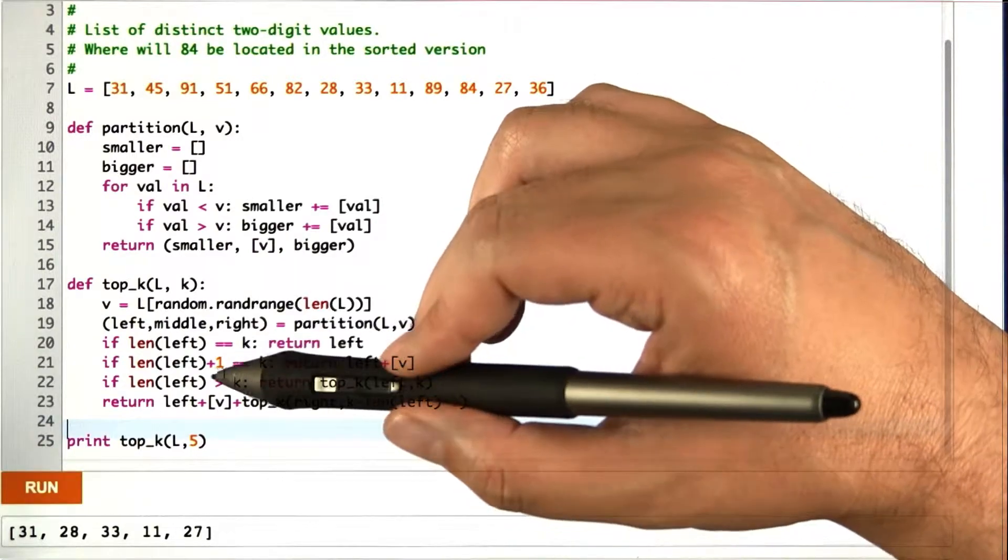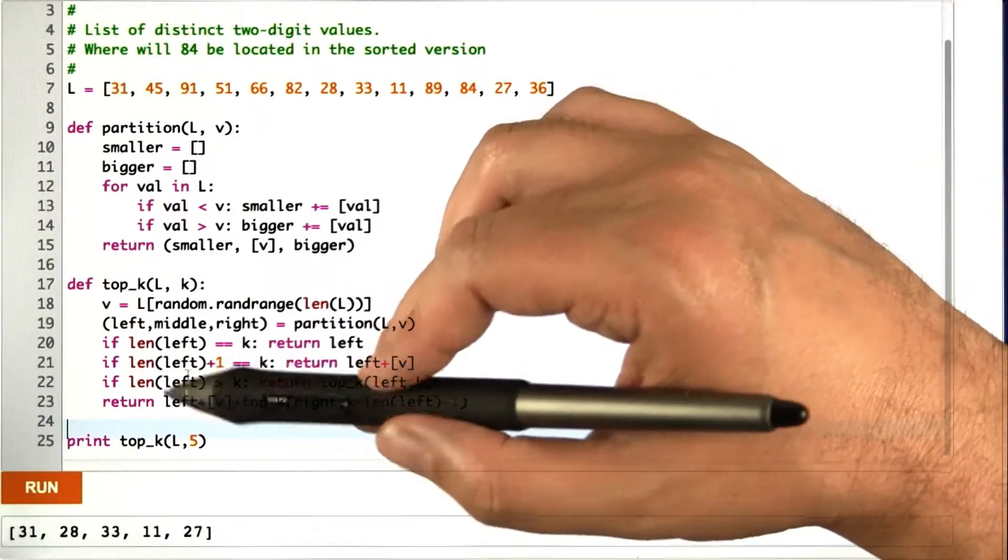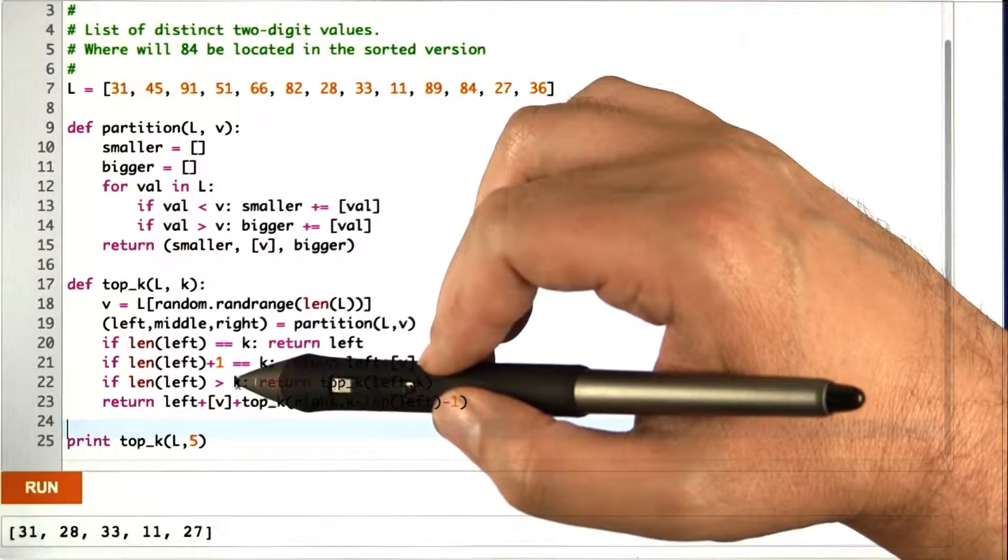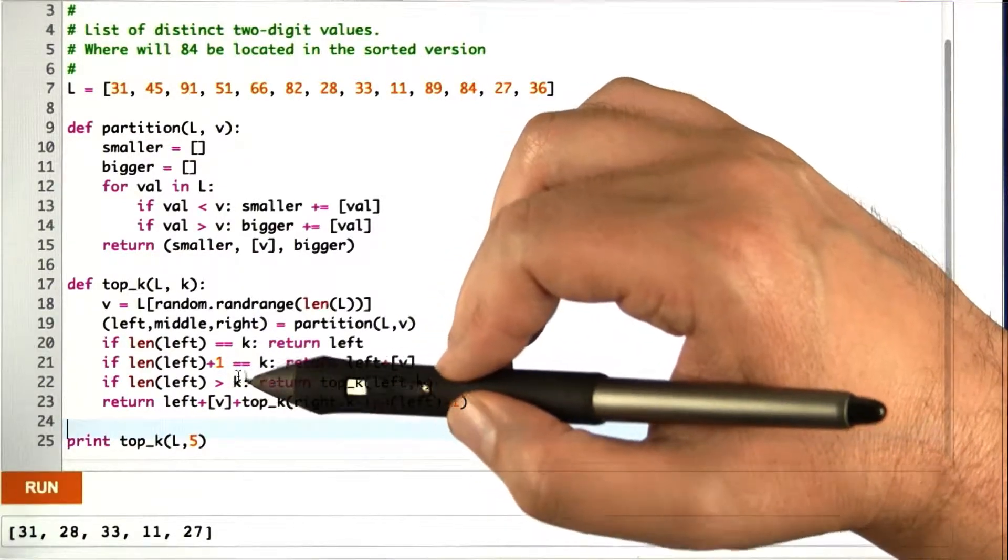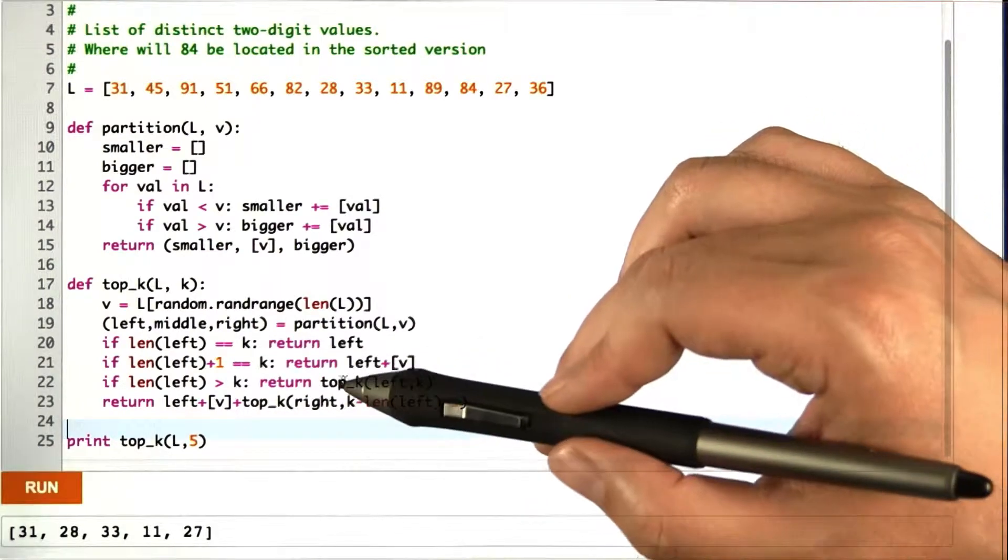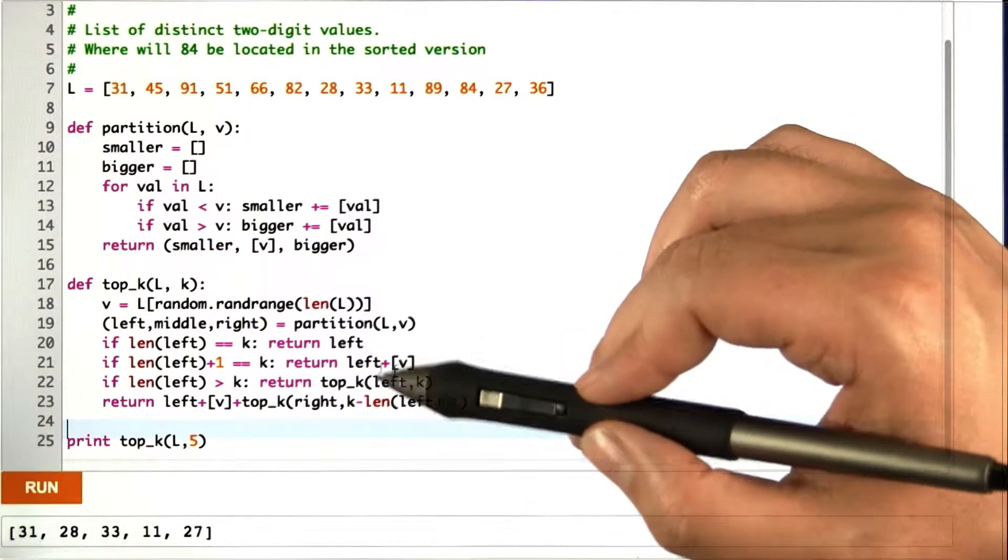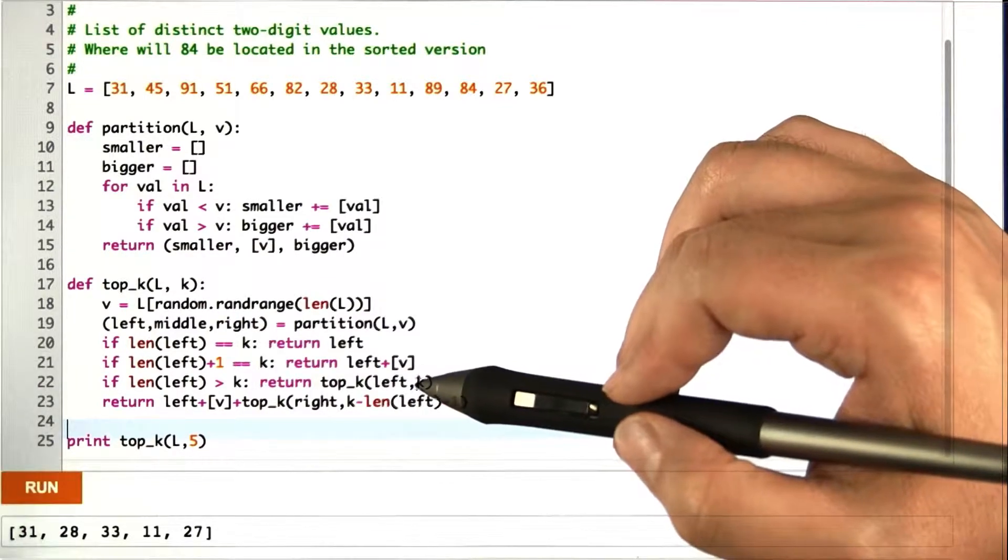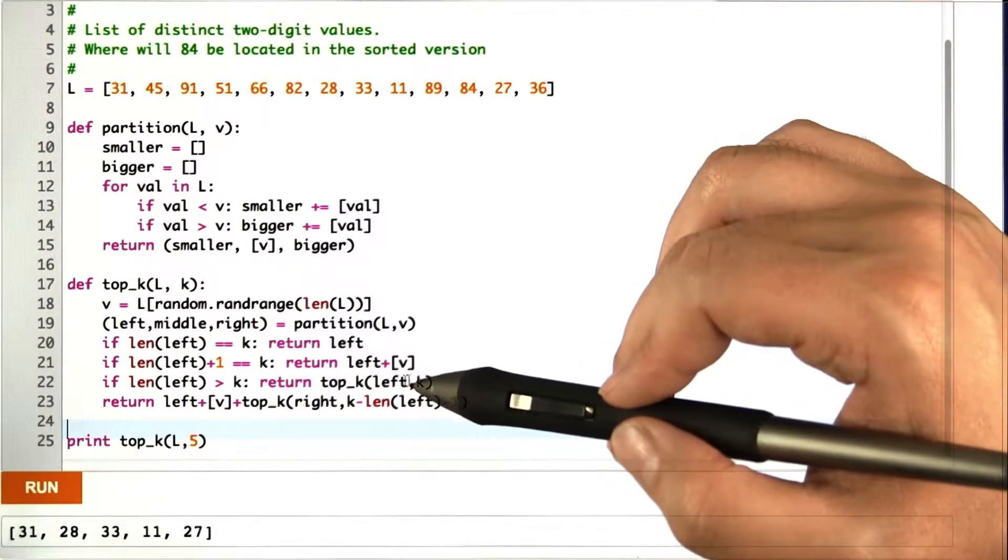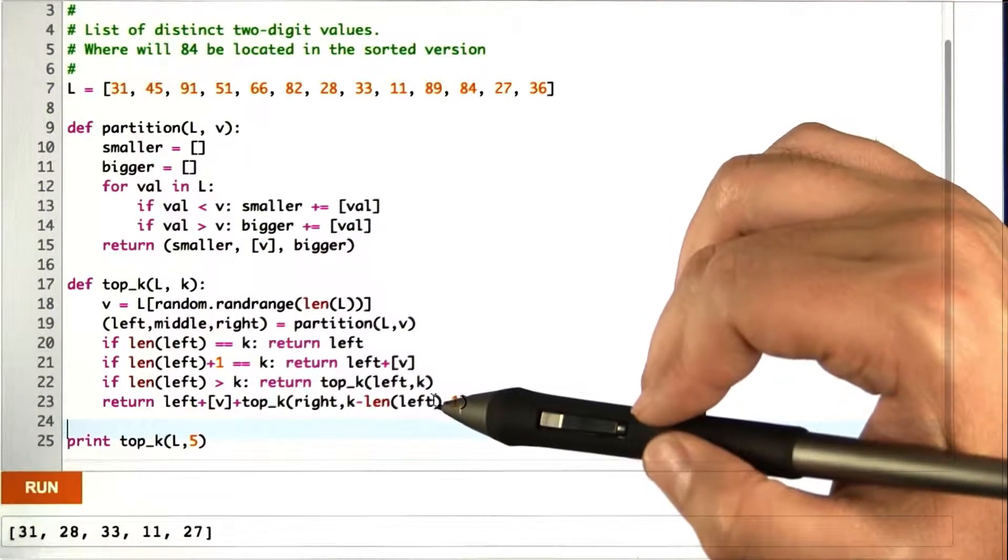All right, so it gets trickier when the stuff on the left is bigger than k. Well, we went looking for the top k, but we just found something more than the top k. So we have to whittle it down further. And we can do that just by calling top k on only the elements on the left, and we just want the k best elements on the left. So we've made some progress, but we haven't completely solved the problem yet.